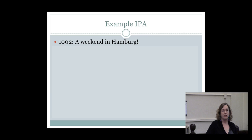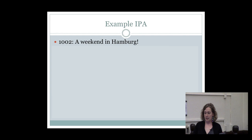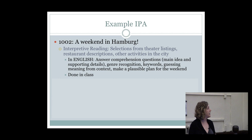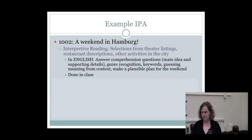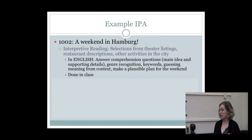To illustrate further, I'll briefly describe an IPA we're currently using in German 1002 and 1022. The students are told they are studying abroad in Germany — that's the context — and they want to go to Hamburg for the weekend with a friend. In the interpretive reading, they figure out what they want to do that weekend. They're given authentic selections from theater listings, restaurant descriptions, and other activities in the city, and read through those answering comprehension questions, genre recognition questions, keywords, and guessing meaning from context.